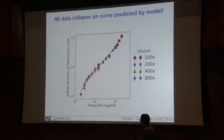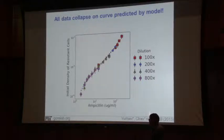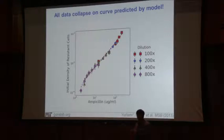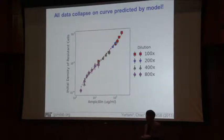The model also makes other experimentally testable predictions we confirmed — such as what happens when you add an inhibitor of the beta-lactamase enzyme, something often used clinically together with antibiotics to prevent the enzyme from working. We found that adding this inhibitor actually favors the resistant population: even though it specifically targets resistant cells making them less resistant, that leads to an increase in the resistant fraction at equilibrium. That's because if resistant cells are not as resistant, you need more of them at equilibrium to break down the antibiotic in a fixed amount of time.